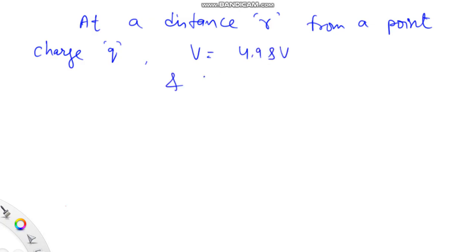Hi, in this problem, at a distance r from a point charge, the potential is given as V = 4.98 volts and electric field is given to be E = 16.2 volts per meter. In the first part of the problem, we have to find the distance.